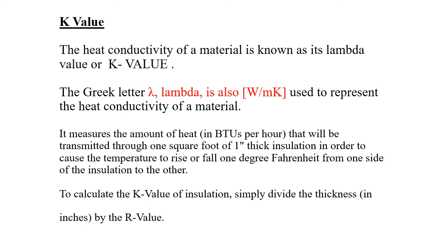The K value of insulation can be obtained by dividing the thickness by the R value. So if we want to find the K value, we divide the thickness of the material by the R value. And if we want the R value, we divide the thickness by the K value.